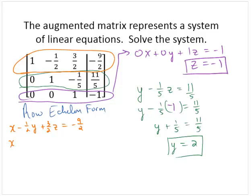So x minus 1/2 of 2 plus 3/2 of negative 1 equals negative 9/2. So then x minus 2/2 minus 3/2 is negative 9/2. So x minus 5/2 is negative 9/2. And adding 5/2 to both sides, I would have x equals negative 4/2, which is negative 2.